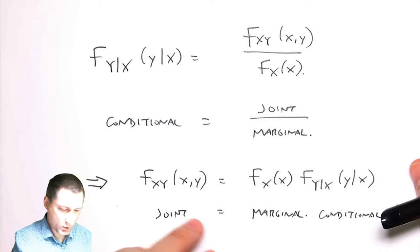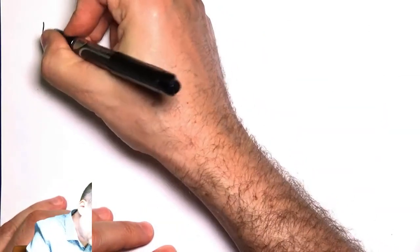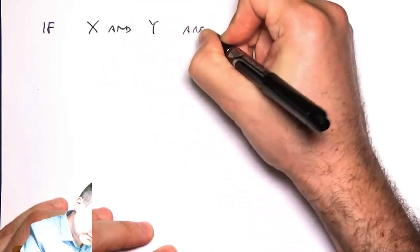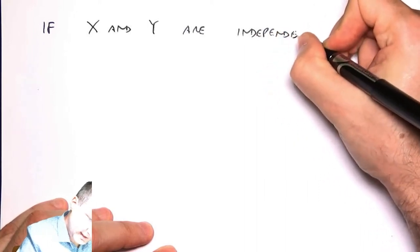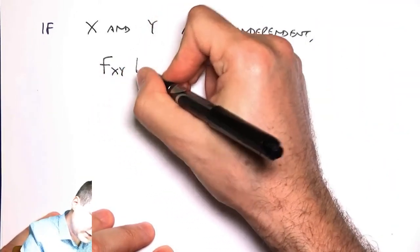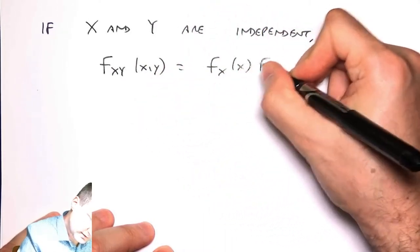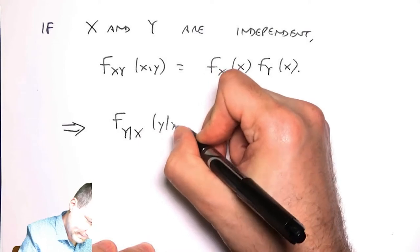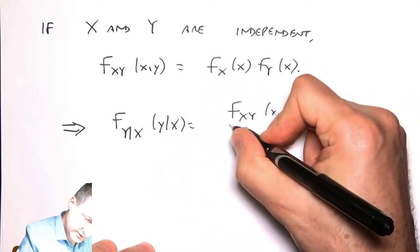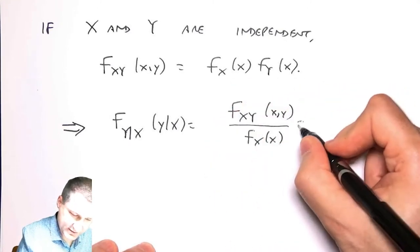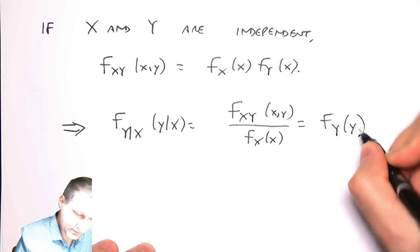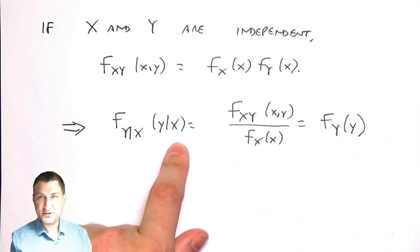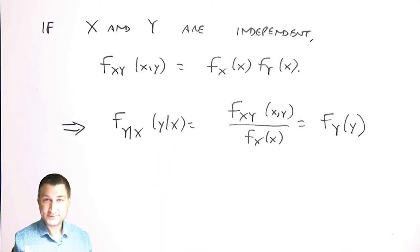Another implication is what happens when X and Y are independent. If X and Y are independent, then the joint is equal to the product of the marginals. What that would mean is that the conditional, which is supposed to be the joint over the marginal, would equal this product and the f of X's would cancel out. This is like saying that telling you the value of X doesn't change the underlying PDF of Y, which makes sense when X and Y are both independent.